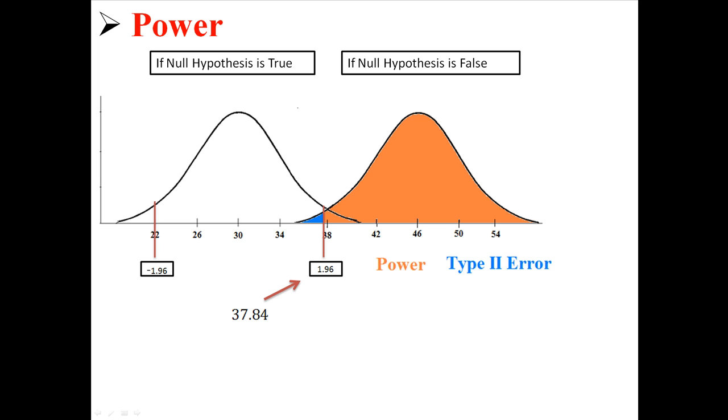And now that we know that it's 37.84, we can use that number to calculate what probabilities are associated with power and type 2 error. So first we're going to calculate the z-score. Now we're using the distribution on the right. We're going to take 37.84 minus the mean of 46 divided by the standard error of 4. And we're going to find out that the 1.96 from the distribution on the left is the same as negative 2.04 in the distribution to the right.